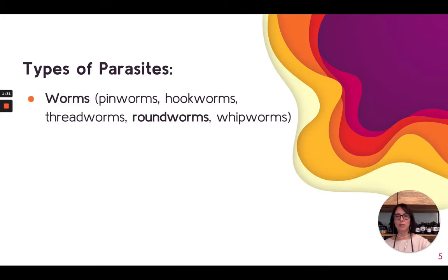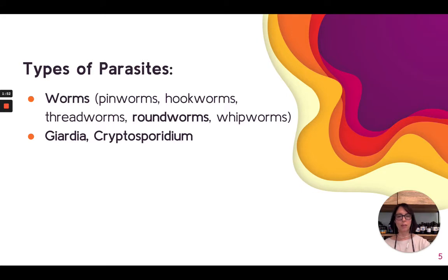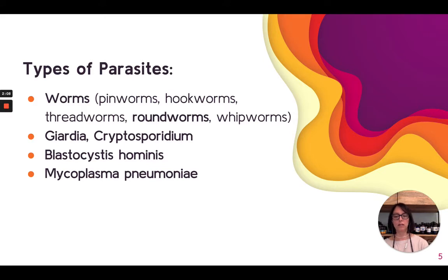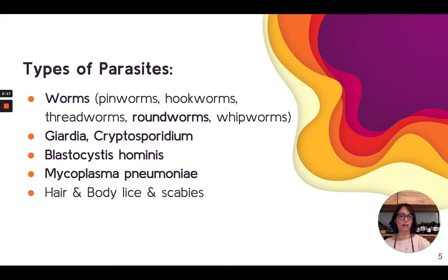Types of parasites: we've got worms on the macro end of the spectrum — they're easy to see. I've bolded the ones I see most commonly; I'd add pinworms too, but roundworms are really common. Giardia and Cryptosporidium — anyone who's been a hiker or camper is probably familiar. Blastocystis hominis I put in its own category because it's very common and comes up on testing a lot. I also included one that's not an intestinal parasite but lives in the bloodstream — we'll talk briefly about it. Hair, body lice, and scabies I don't see as much, but definitely in certain populations. And malaria — we don't see a lot in the United States, but worldwide malaria is the number one parasite that kills the most people.